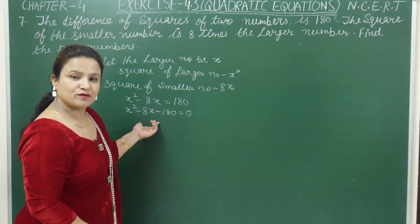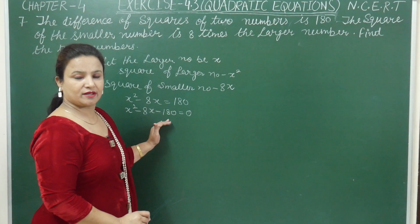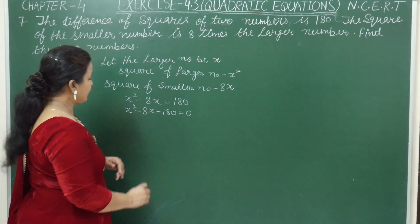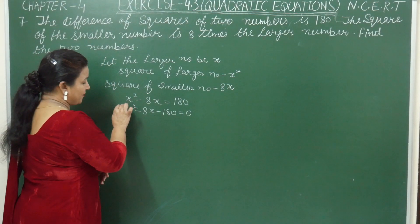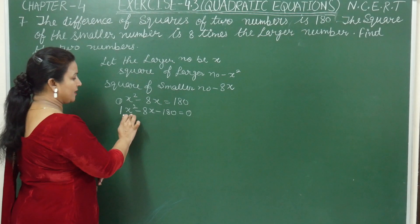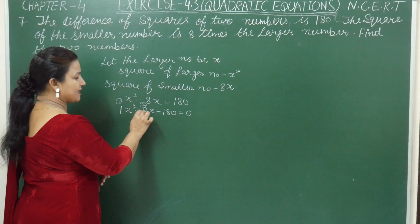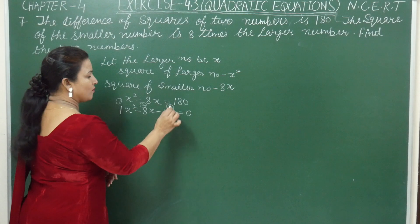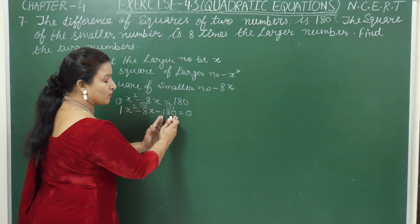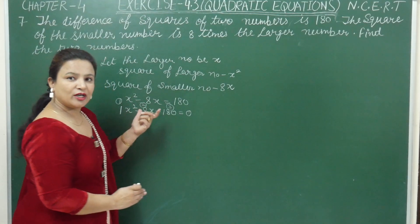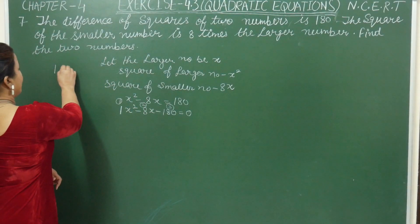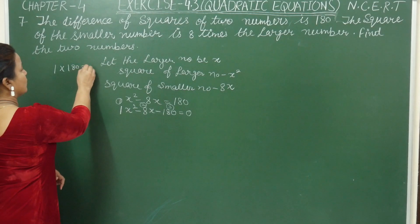Now we have to find the roots of the quadratic equation. I am using the middle term splitting method. The first coefficient is 1 (for x squared), the middle term coefficient is 8x, and the constant is 180. In middle term splitting, we multiply the first and third numbers: 1 into 180 equals 180.